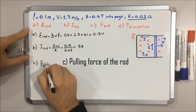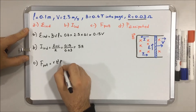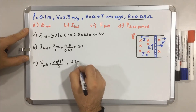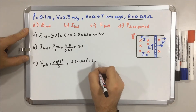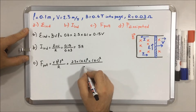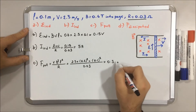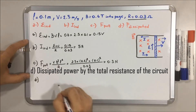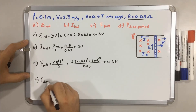The induced current equals EMF induced over R. EMF induced is 0.15 and R is 0.03, so the current equals 5 amperes. For part C, the pulling force formula is F equals V times B squared times L squared over R: 2.5 times 0.6 squared times 0.1 squared over 0.03.